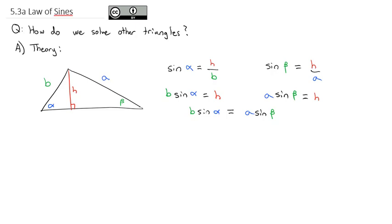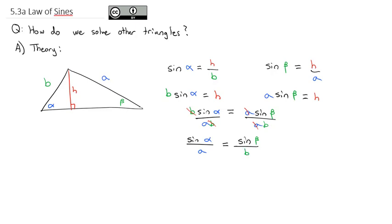To make this formula easier to use, we're going to divide both sides by AB. When we do that, we can reduce out the A's and B's, and what that leaves us with is sine of alpha divided by the opposite side A, equals sine of beta divided by the opposite side B.